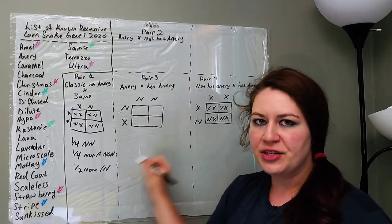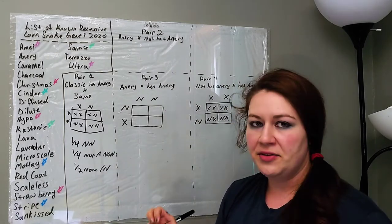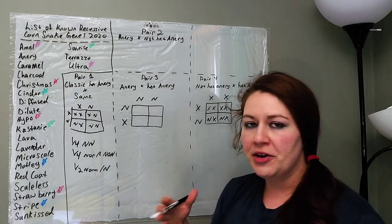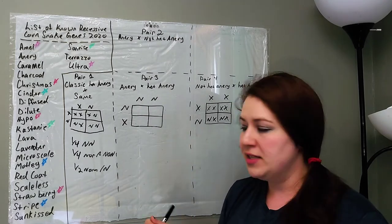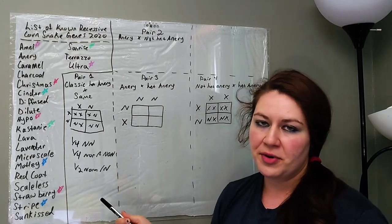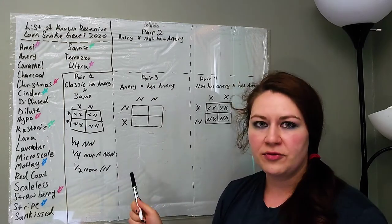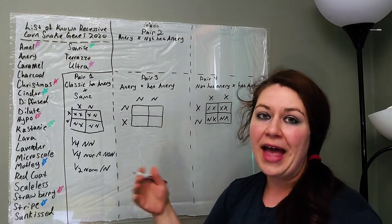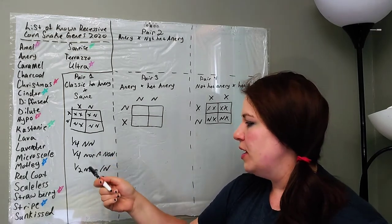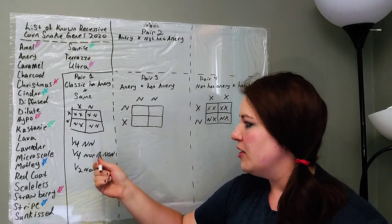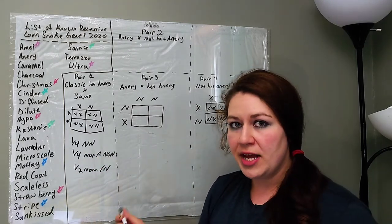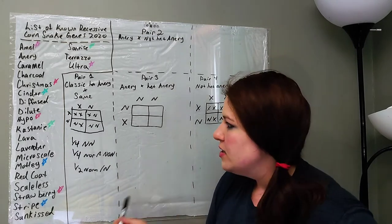Now, I put this slash in here like this to signify het. That's just shorthand for myself. You guys are welcome to sort of figure out what works for you when you're writing things out. You can write out the word het. But when I'm writing shorthand or when I'm typing, I will sometimes, just for myself, put the slash there, which just simply means het for. So, like I said, we have a quarter anery, and then we have a half that are normal het anery, and a quarter that do not have anery at all. And, as I also mentioned in the last video, this is where we get the percentages.